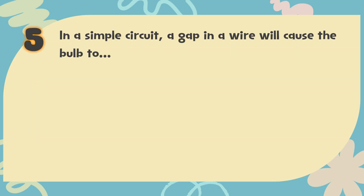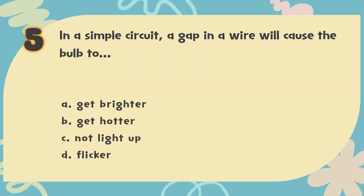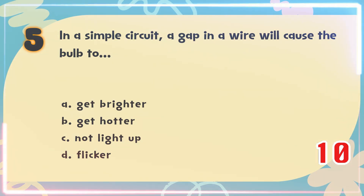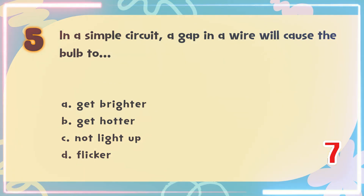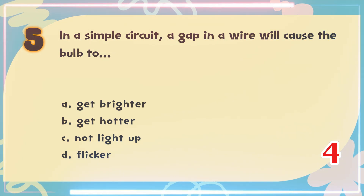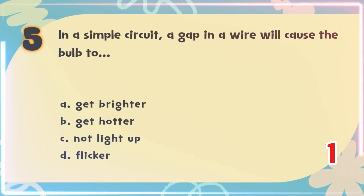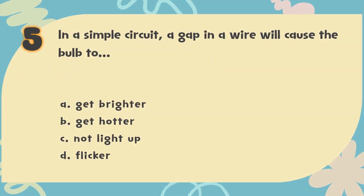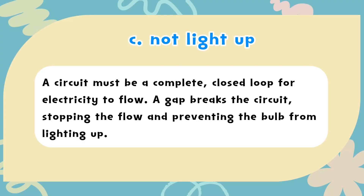Number 5: In a simple circuit, a gap in a wire will cause the bulb to — A. Get brighter, B. Get hotter, C. Not light up, D. Flicker. The correct answer is C. Not light up. A circuit must be a complete, closed loop for electricity to flow. A gap breaks the circuit, stopping the flow and preventing the bulb from lighting up.